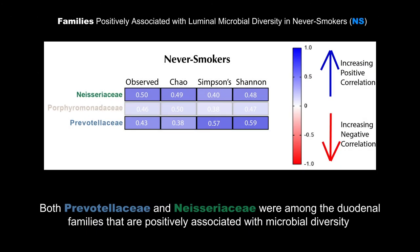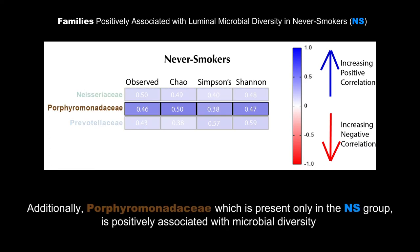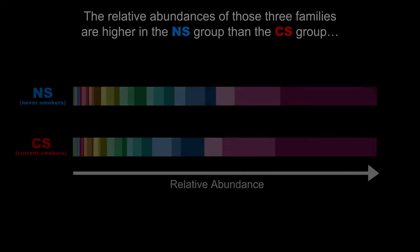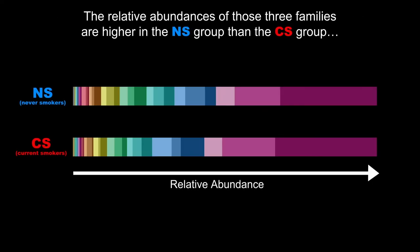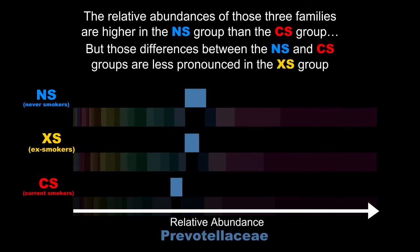Both Prevotellaceae and Neisseriaceae were among the duodenal families that are positively associated with microbial diversity. Additionally, Porphyromonadaceae, which is present only in the NS group, is positively associated with microbial diversity. The relative abundances of these three families are higher in the NS group than in the CS group, but those differences between the NS and CS groups are less pronounced in the ex-smoker group.